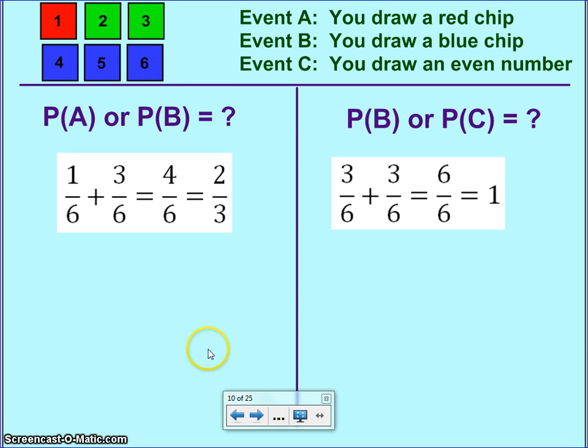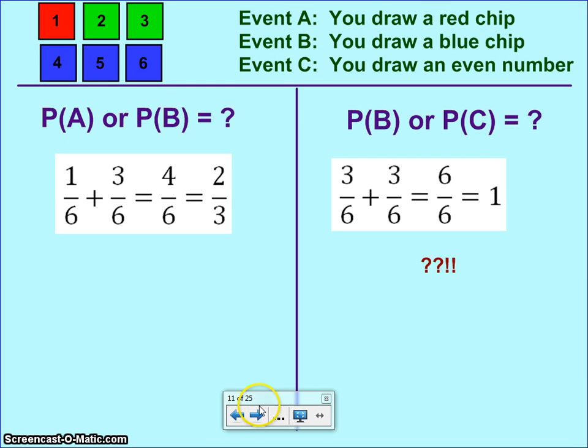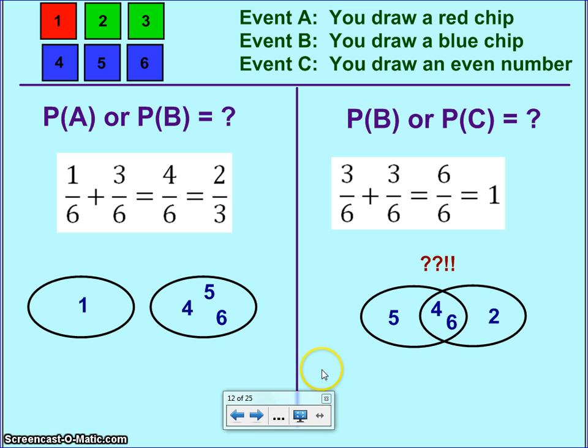But if you look at your chips, does that make sense? That's the problem. Because if you look at your chips, you can draw a one, which is red and odd, so it doesn't fit either event B or C. Or you could draw a three that is green. Green is not blue, nor is three even. So, it doesn't fit into blue or C. So, there's definitely a possibility of not doing one of these two things. But our calculation just said that we had a hundred percent chance of doing that. So, something we did here was wrong. Can you think of a way to correct what we did there?